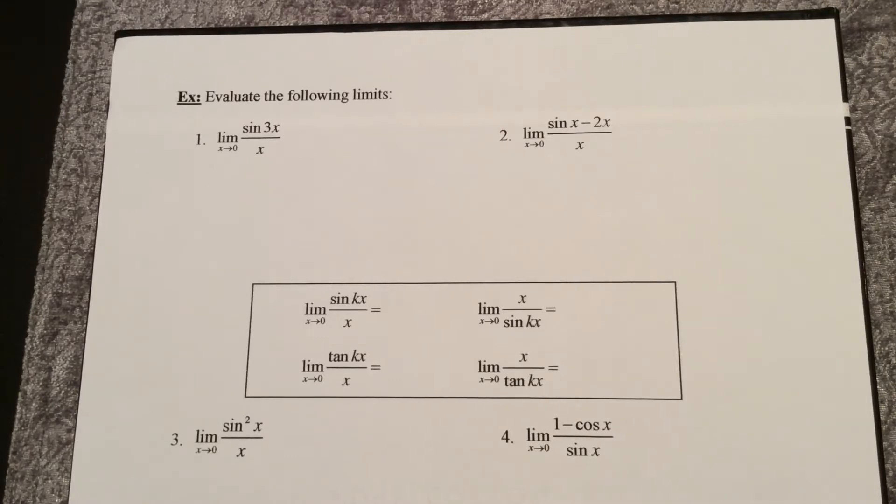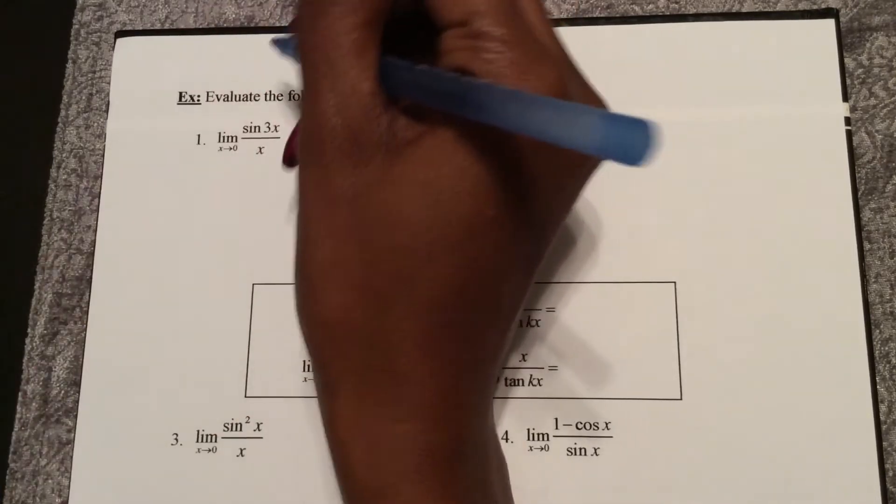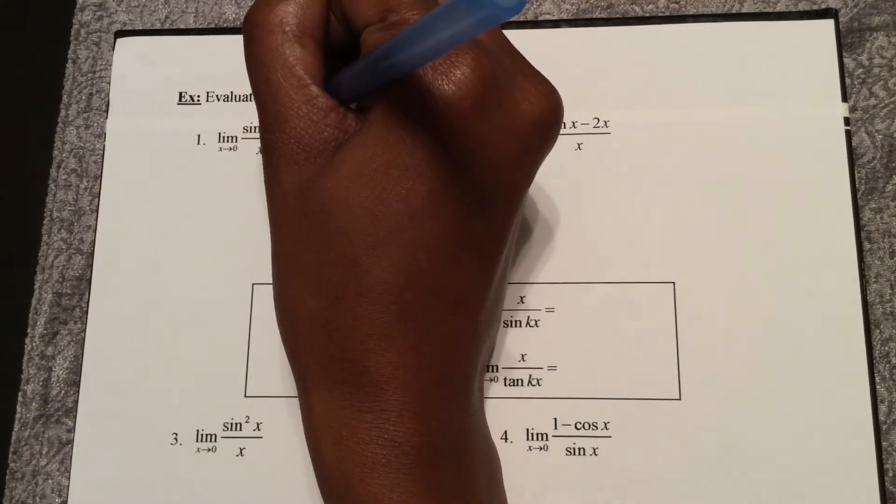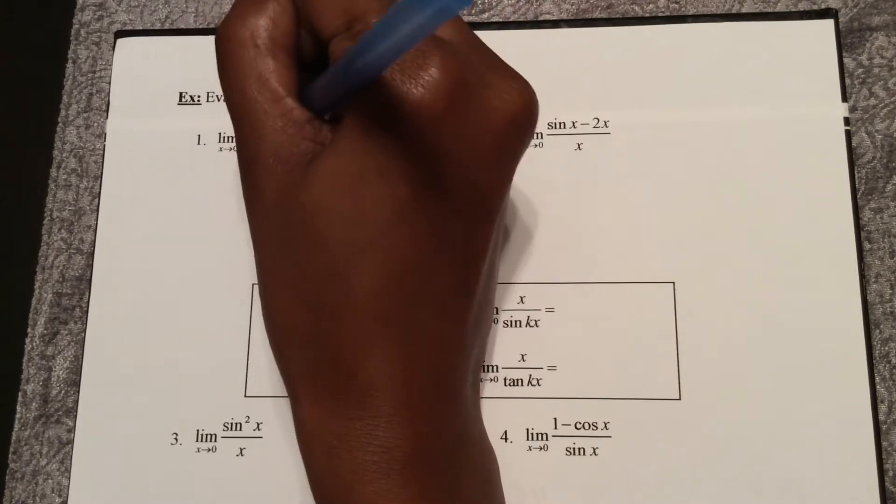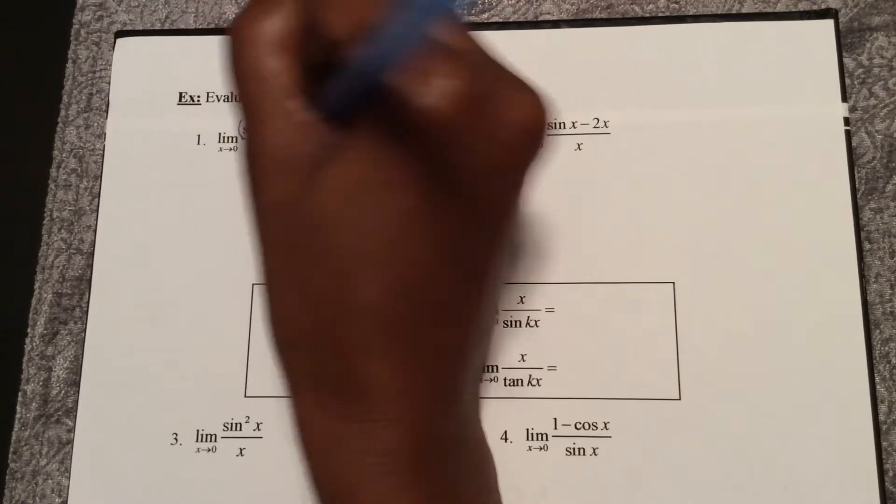Now this looks very similar to sine x over x, but how can I manipulate this limit to look like that special limit that we've memorized? So what I can do is multiply this whole fraction, numerator and denominator by 3.